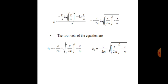Solving the characteristic equation: k equals minus c/m plus or minus the square root of (c/m)² minus 4s/m, all divided by 2. This simplifies to: k equals minus c/(2m) plus or minus the square root of [c/(2m)]² minus s/m. The two roots are: k₁ = −c/(2m) + √([c/(2m)]² − s/m) and k₂ = −c/(2m) − √([c/(2m)]² − s/m).